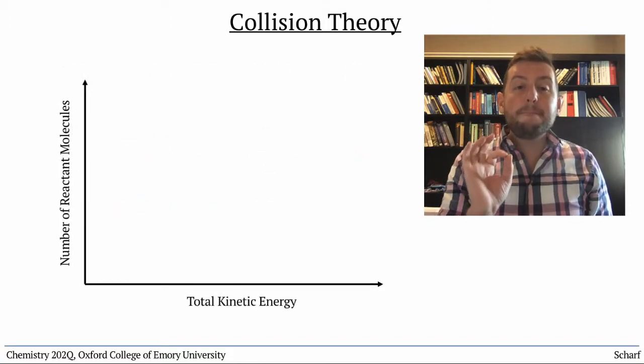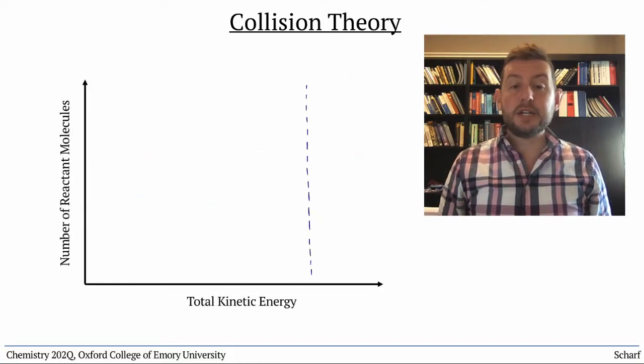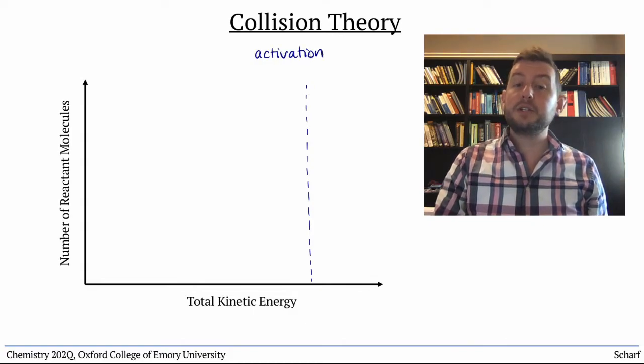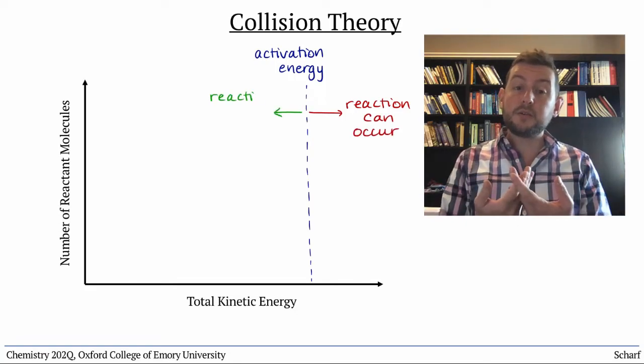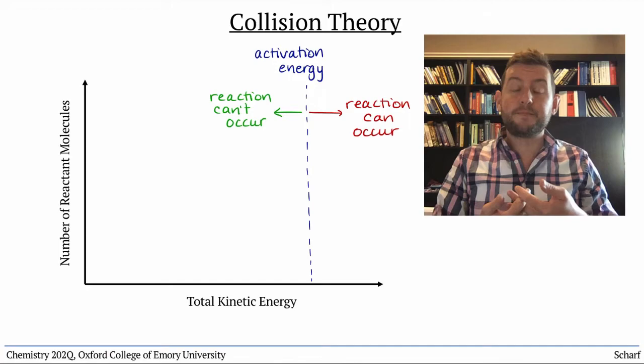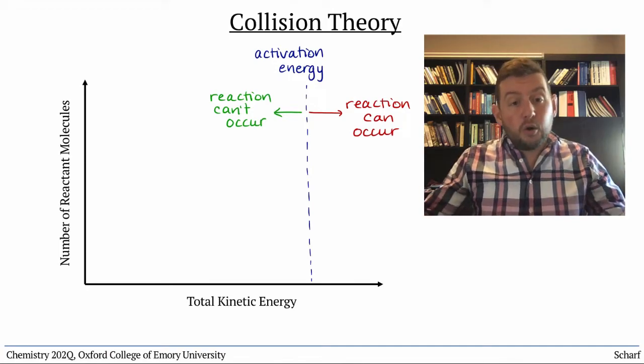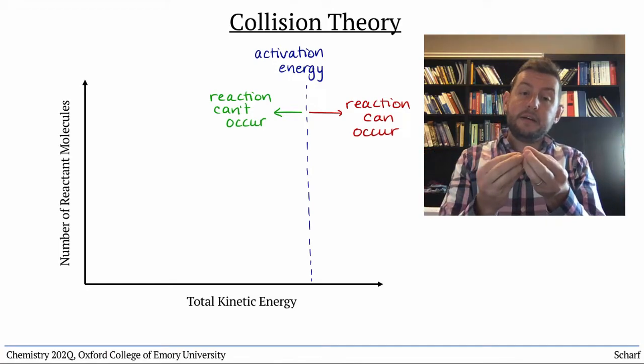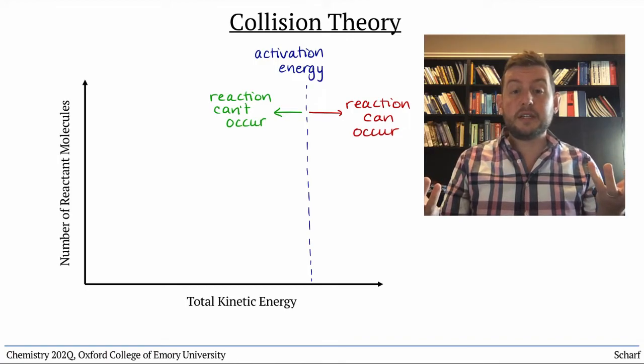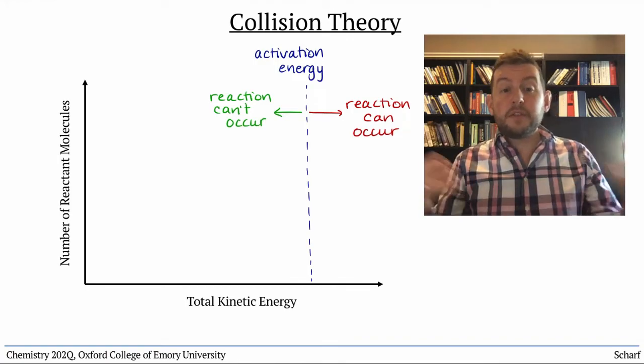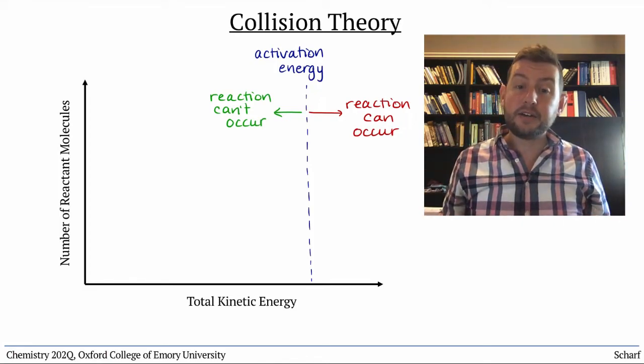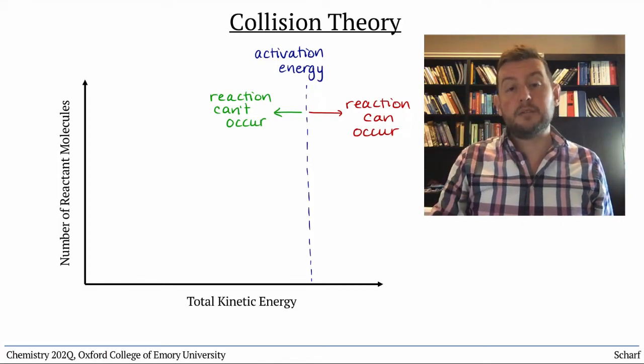Because there's a minimum kinetic energy that's required for a collision to lead to a chemical reaction, it follows that not every collision between two molecules results in a reaction. If two slow-moving molecules collide, even if they're in the correct orientation, they probably won't react. But if they're moving faster, that is, they have higher kinetic energy, they're more likely to react.